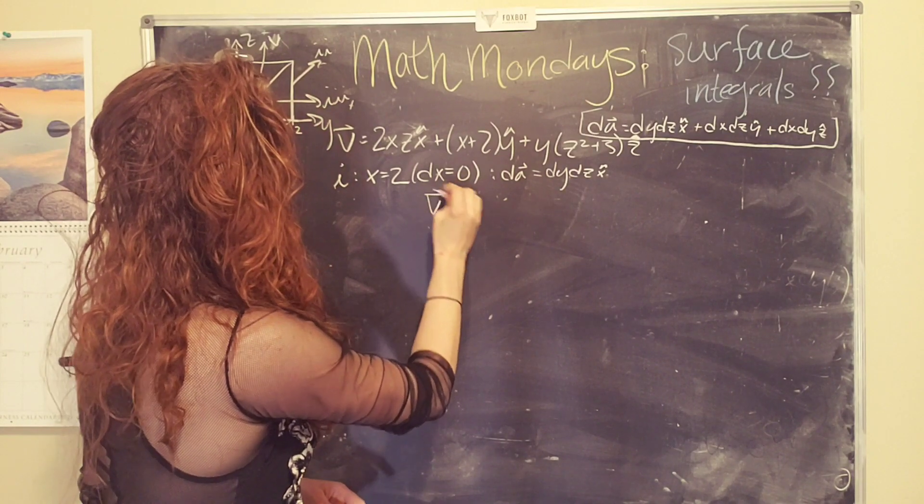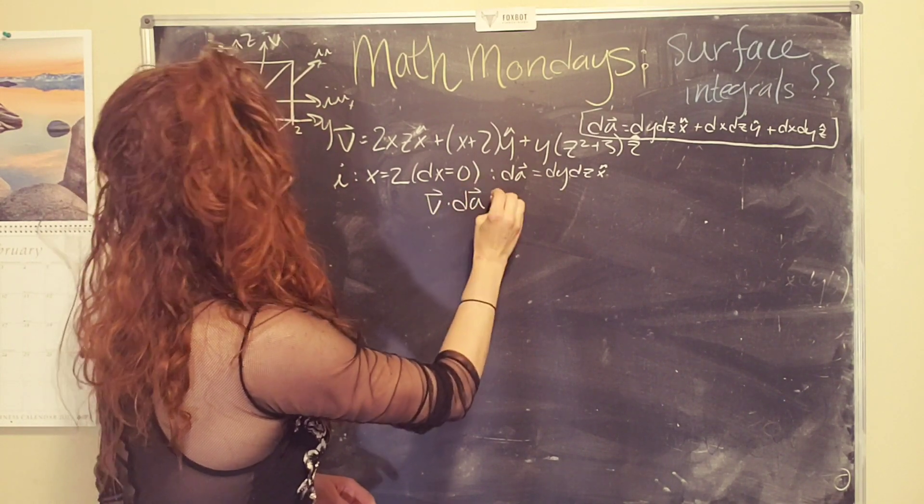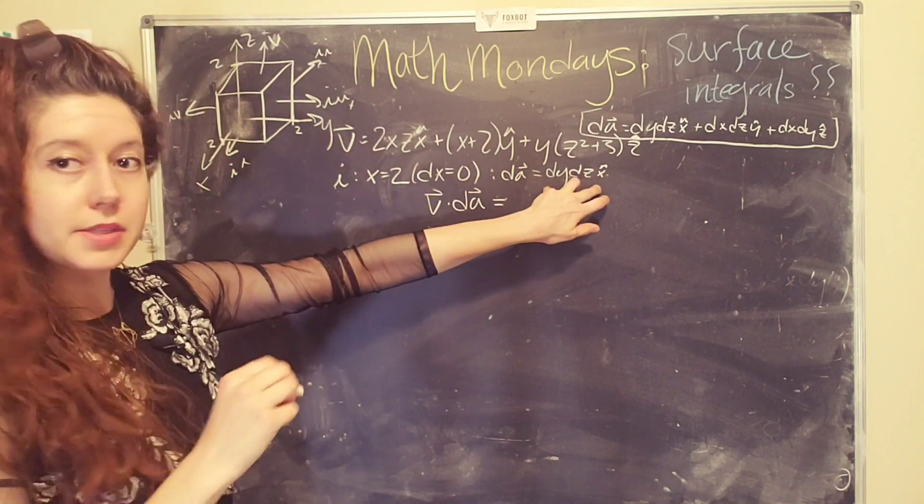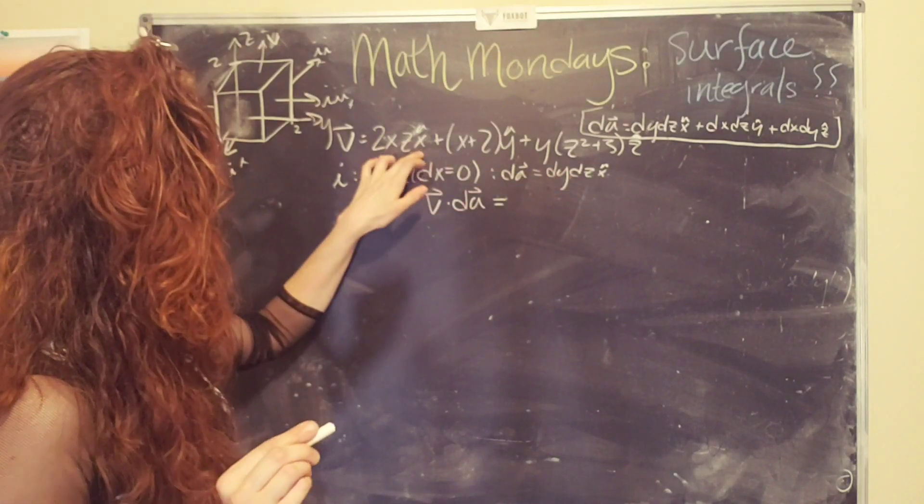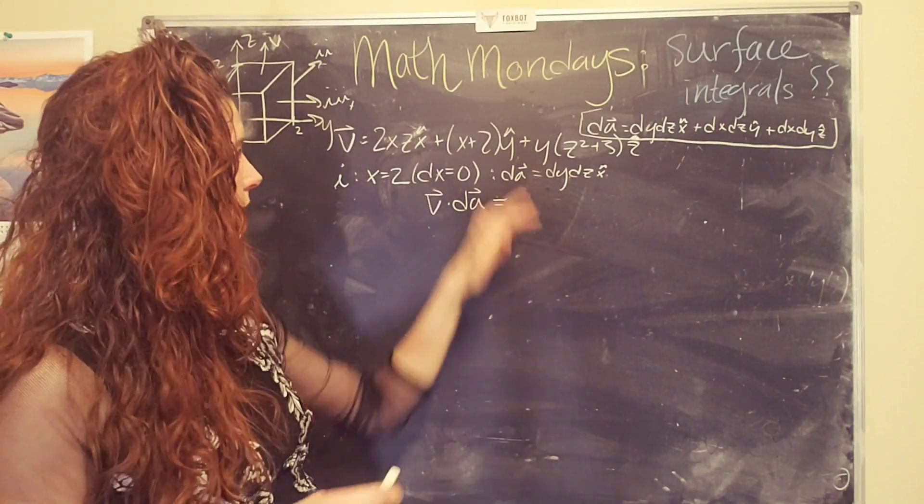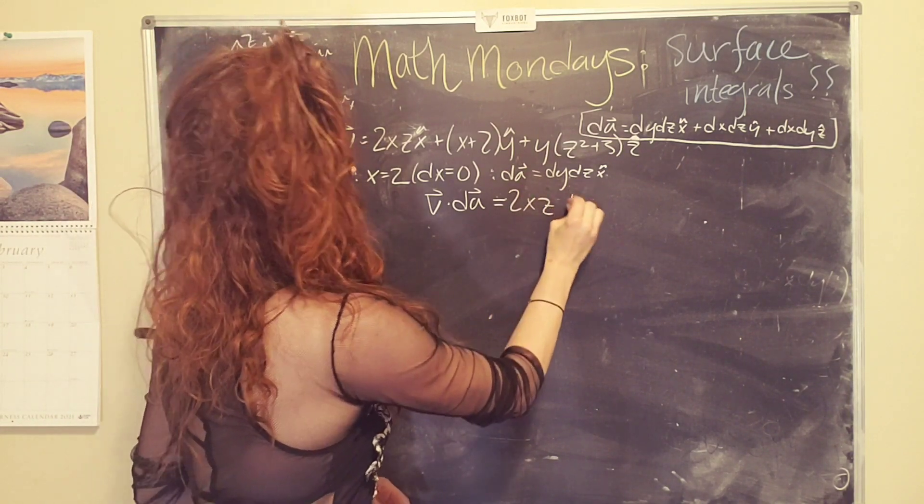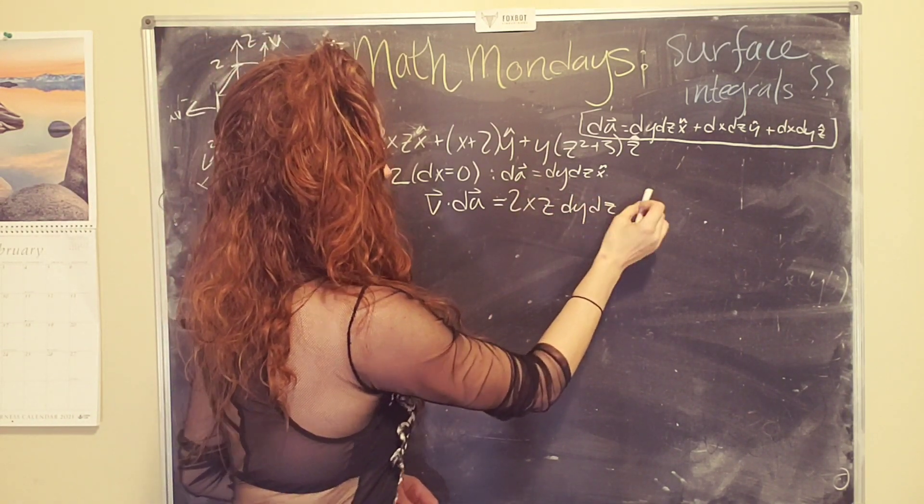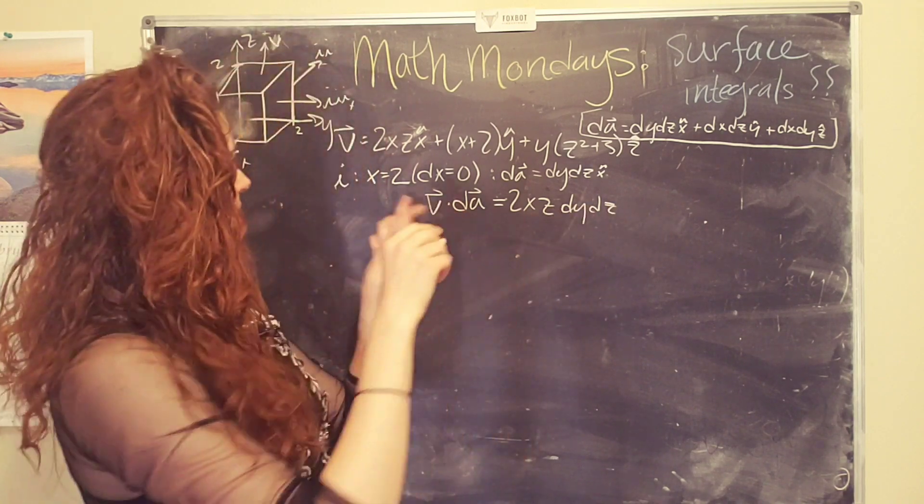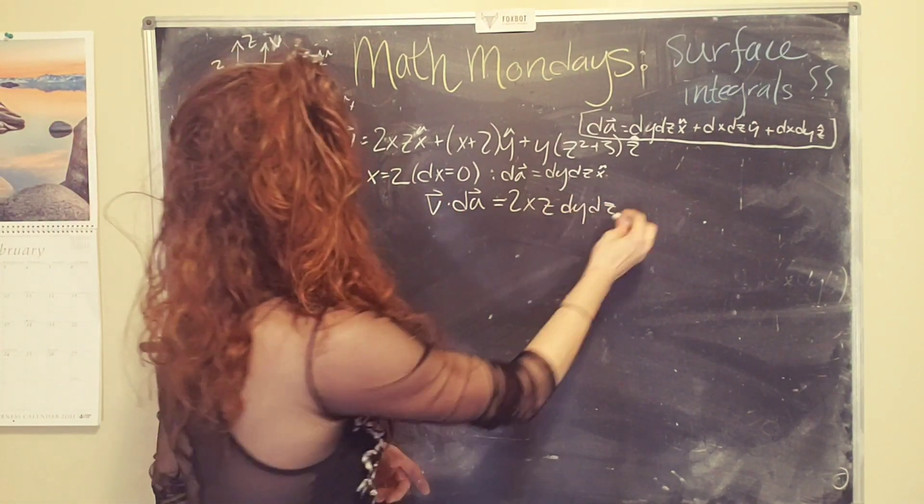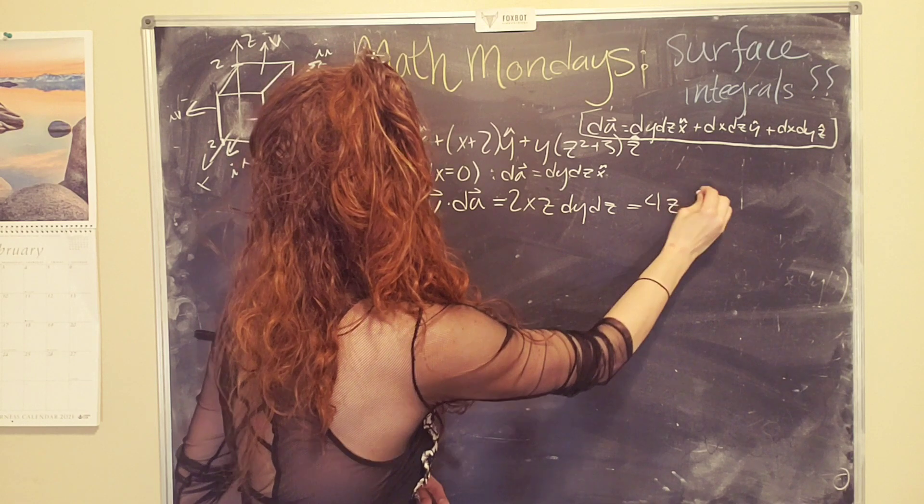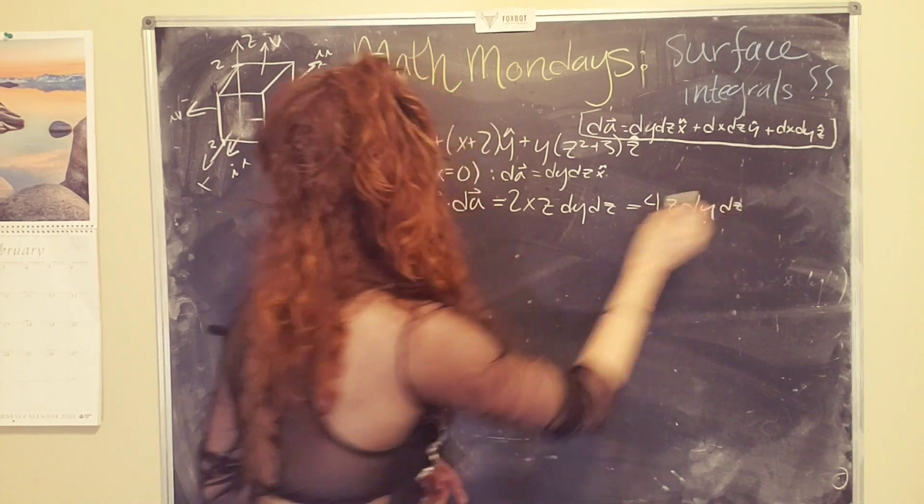And so then that means that v dot dA, the only components that are going to be non-zero or the x hat components. X hat dot x hat is one and all the others are zero. So we have 2xz times dy dz, but x is two. So we plug that in here and we end up with 4z dy dz. Okay. Boom.